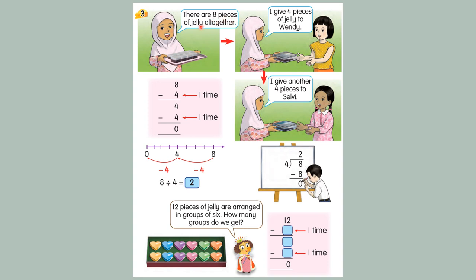These are 8 pieces of jelly all together. I give 4 pieces of jelly to Wendy, and another 4 pieces to survey. Ini menunjukkan salah satu cara untuk awak buat bahagi — awak boleh buat bahagi guna cara tolak. 8 tolak berapa kali 4. Awak kena tolak 4, itu 2 kali. 8 minus 4 equal to 4, minus 4 equal to 0. So this is 2 times, means 8 divided by 4 equal to 2.